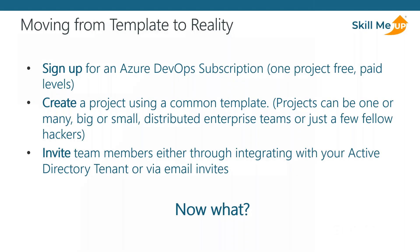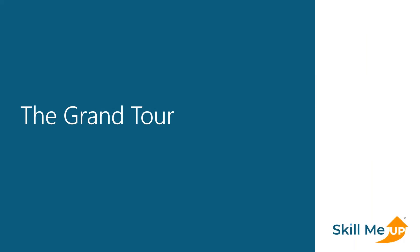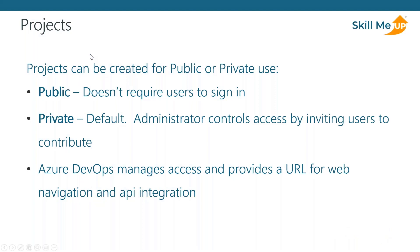Once that's set up, let's take a tour through Azure DevOps using main navigation. On creation of a project, projects can be either public or private. In the case of public projects, Azure DevOps provides a forward-facing URL and the project becomes anonymous — it doesn't require users to log in, similar to a public GitHub repo. For private projects, which is the default and more commonly used by enterprise teams, an administrator controls access by inviting users to contribute. In either case, DevOps manages the access and provides the URL for web navigation and API integration.